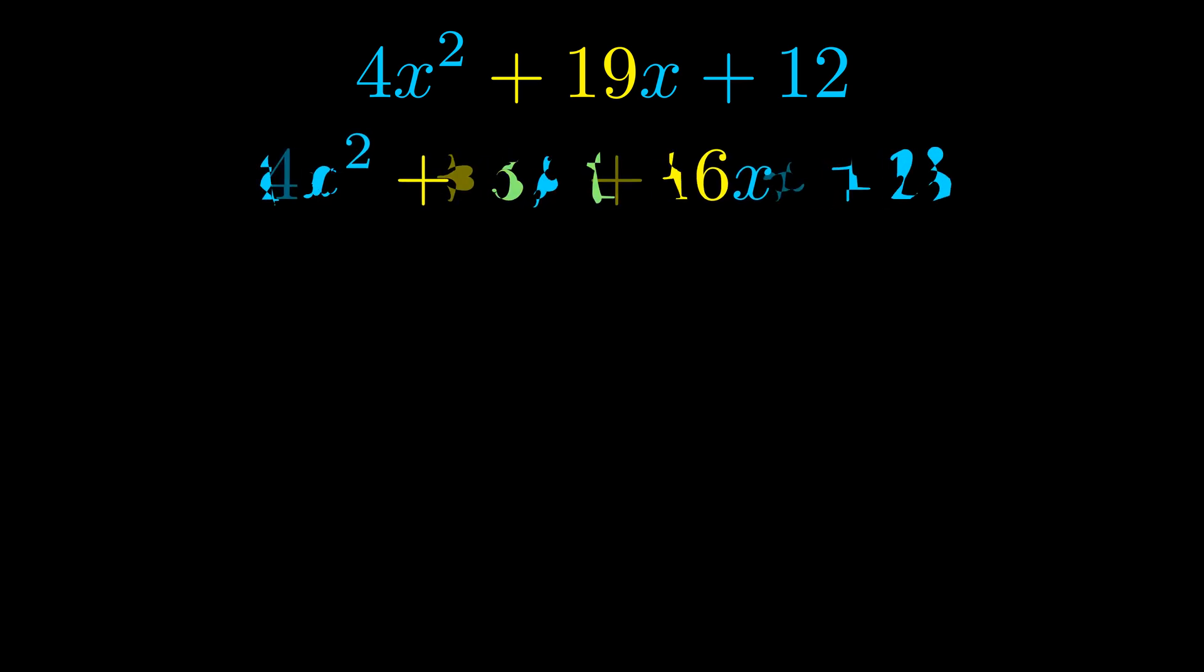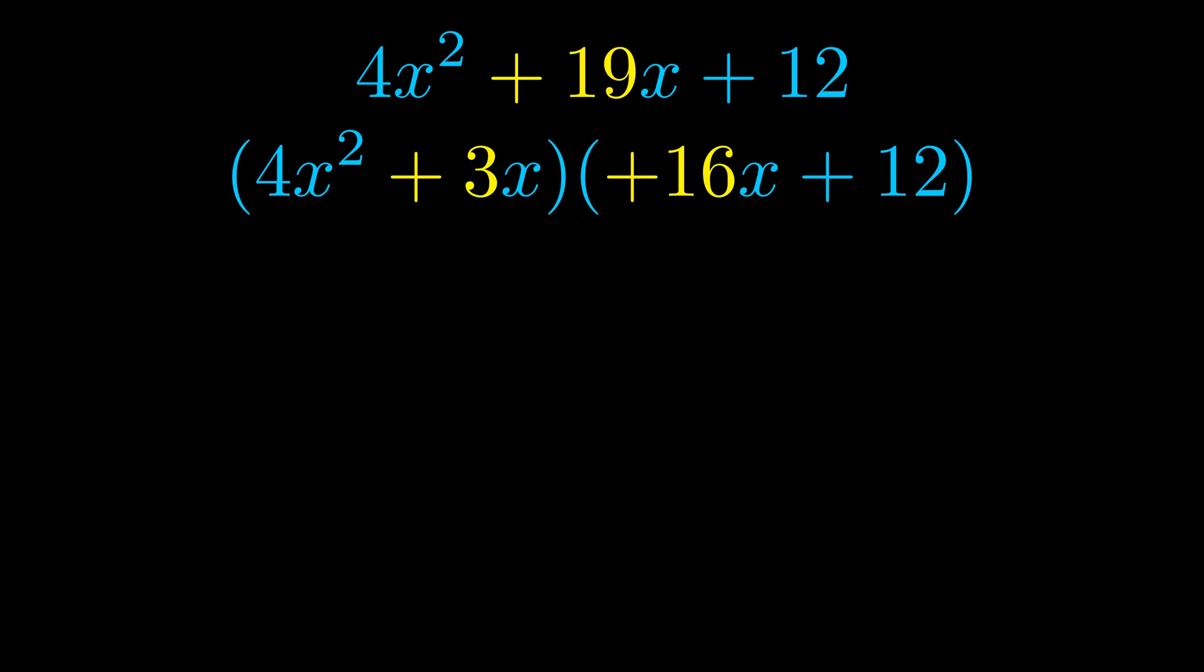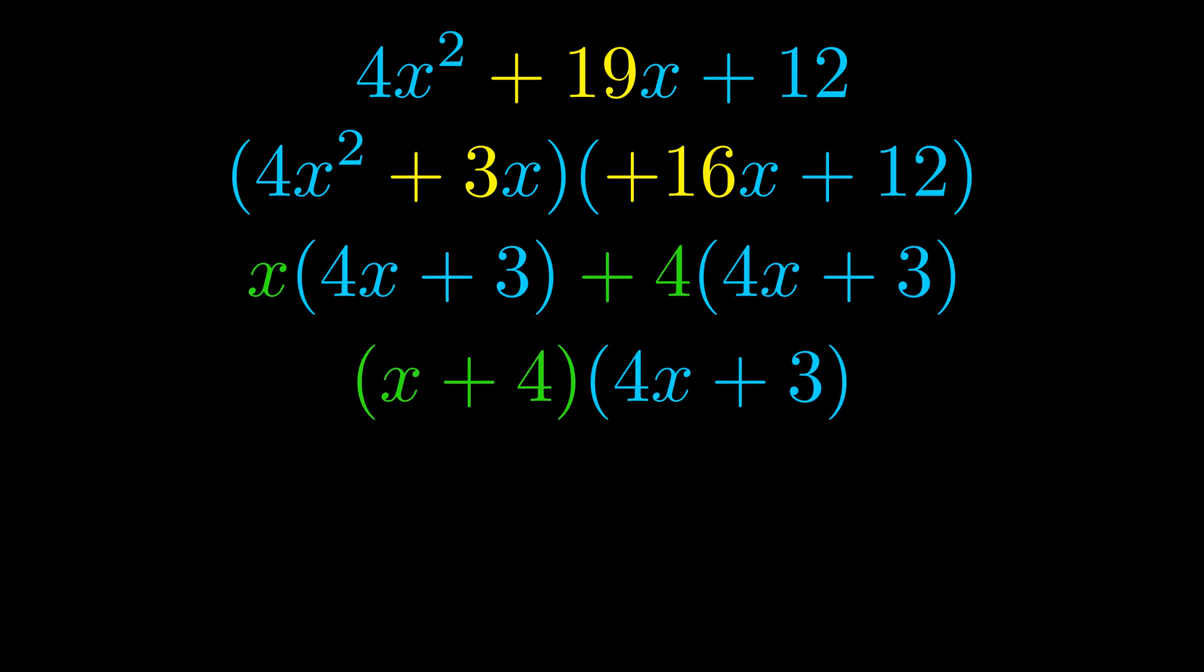Once we've done this we go ahead and we put parentheses around the first term and the last term. And we do that so that we can take the greatest common factor out of both terms. We can see the greatest common factor is now outside in green. Notice also how what remains inside of the parentheses is the same in both cases. The blue values are the same. Those blue values will become one of our factors and we will combine the two green values the GCFs that we pulled out to get the other one. And that is our fully factored equation.